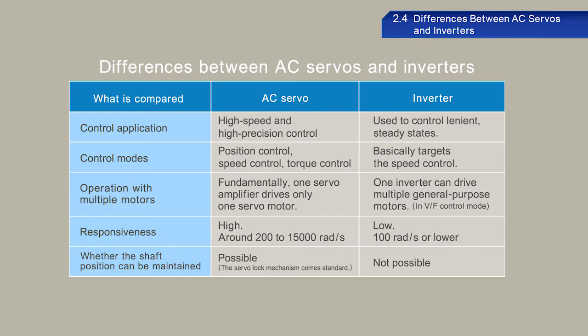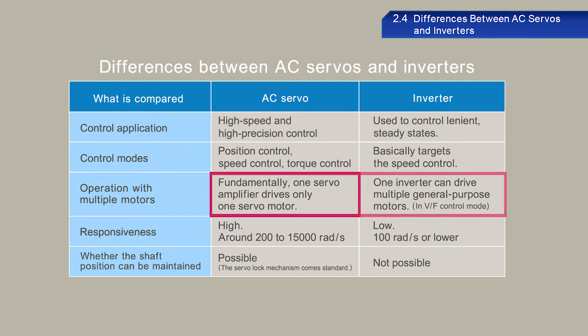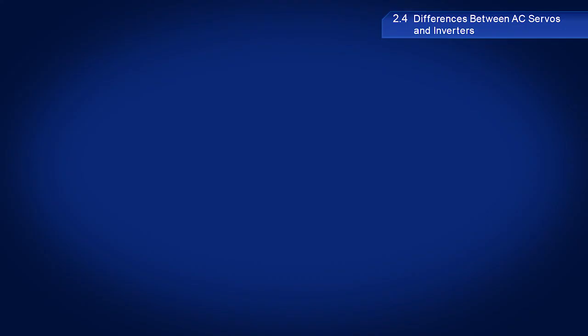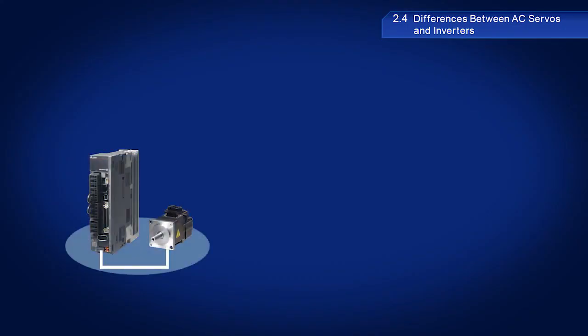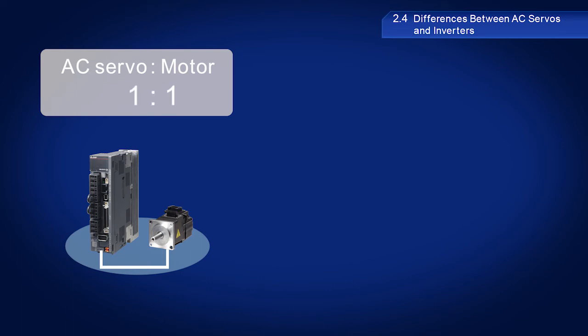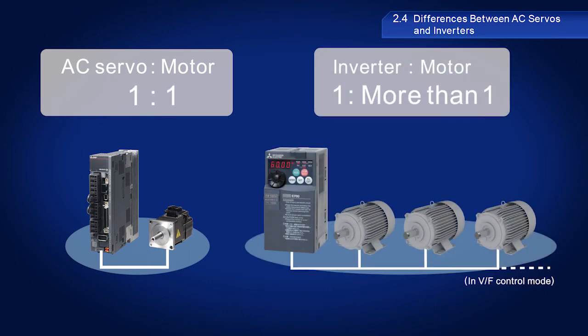Another difference is the number of units that can be connected. An AC servo can only be connected to one motor, whereas inverters can be connected to multiple motors.